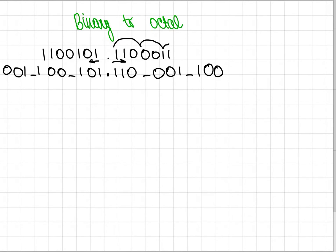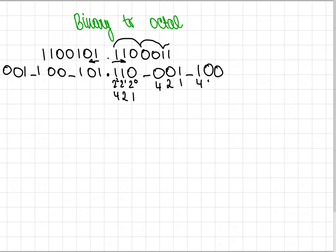Now you have to write out two to the power of something next to each digit. So two to the power of zero, two to the power of one, two to the power of two. What I like to do is skip that and just write 1, 2, and 4. So 4, 2, 1 — 4, 2, 1 — 4, 2, 1 for each group.